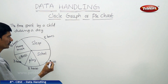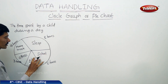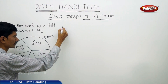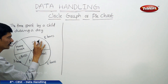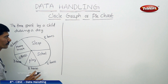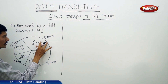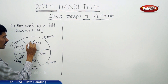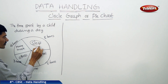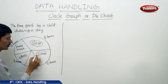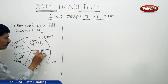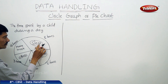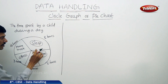Now let us find the size of each sector in the circle — that is, how the circle is divided into sectors. The size of each sector is proportional to the information in the given data, such as the sector representing sleep and the sector representing school.